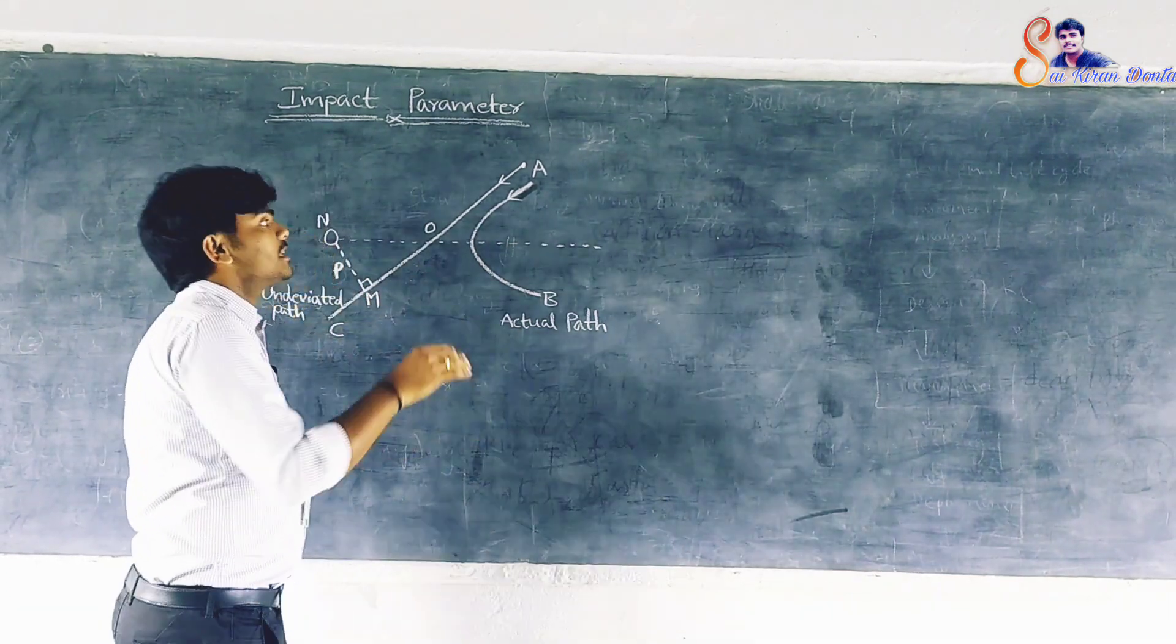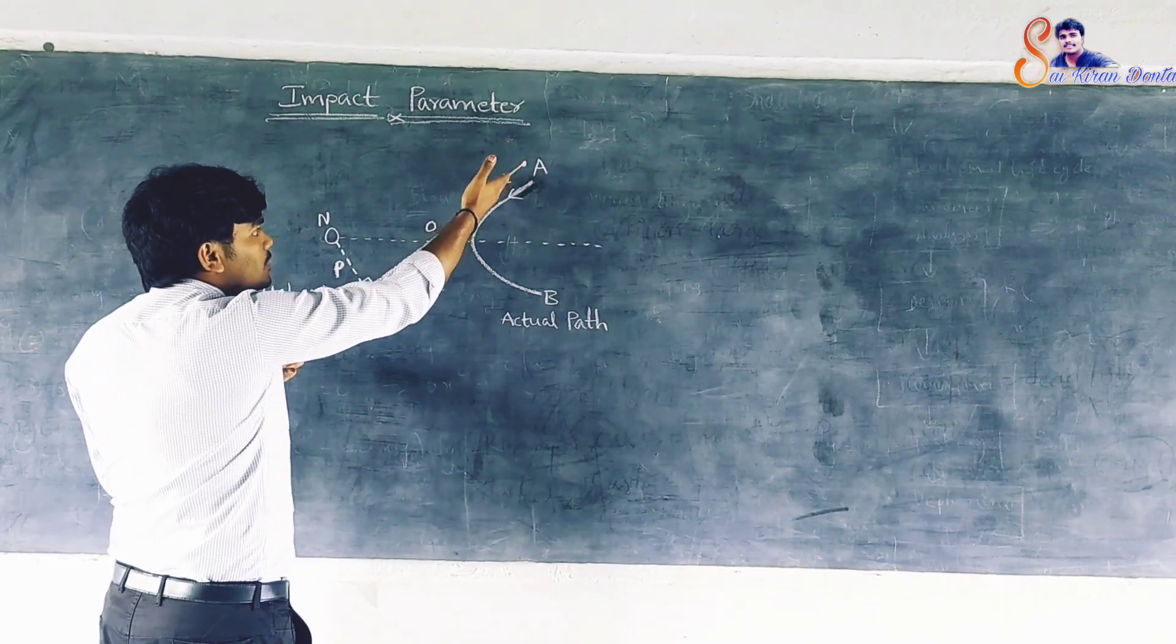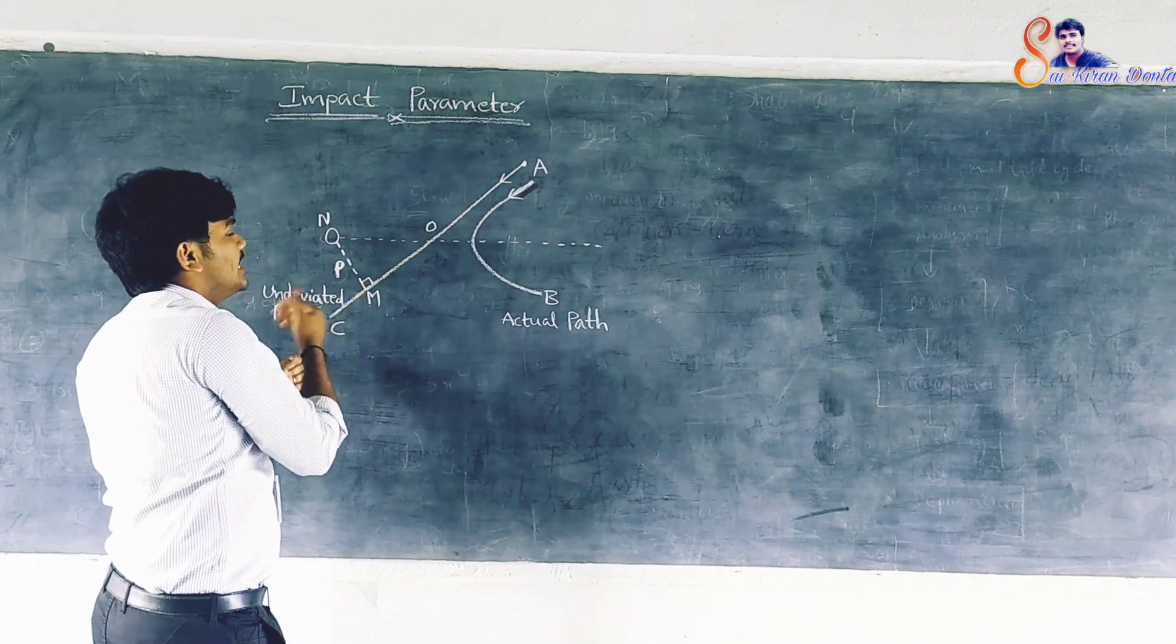In the absence of kulumbic repulsive force, the particle would have followed the stride path AC.